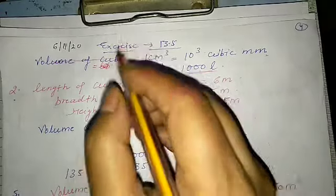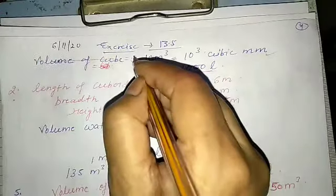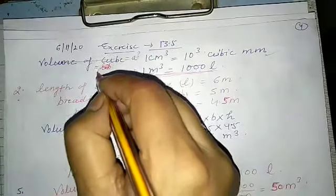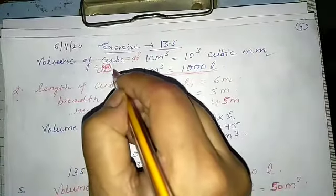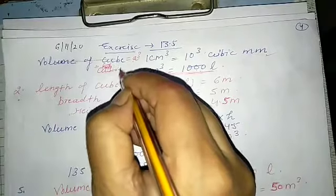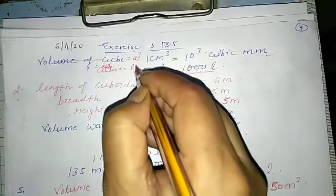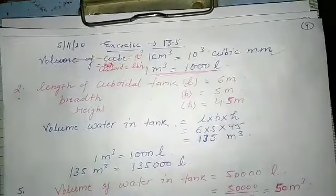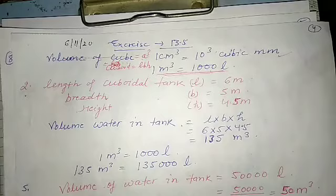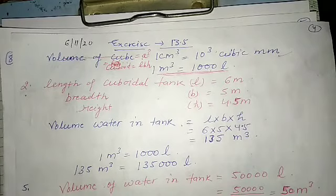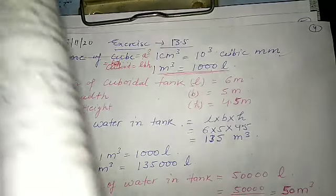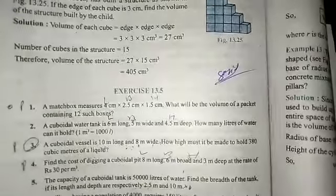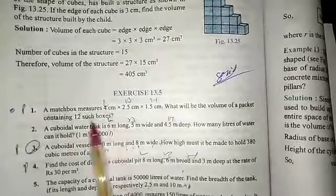Volume of cube equals side cubed, and volume of cuboid equals l × b × h. This was already discussed in the previous video. Now we are going to discuss Exercise 13.5. Here we have the first question: a match box measures certain dimensions — what will be the volume of the packet containing 12 such boxes?